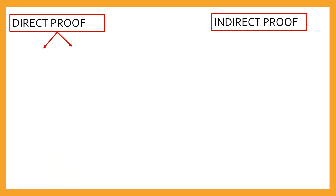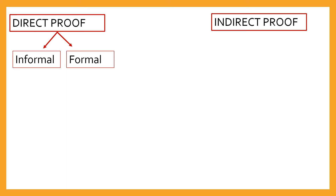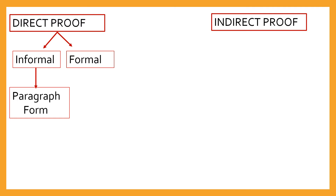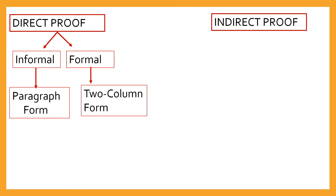Let's see the difference between direct proof and indirect proof. In direct proof, we have informal and formal. For informal, we are just going to write our proof using a paragraph form. While for formal, we are using a two-column proof. In the first column, you're going to write your statements, and in the second column, you're going to write your reasons.